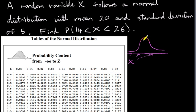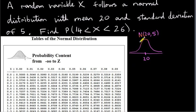This is known as a normal distribution — this particular shape, this particular distribution. This is not just any old symmetric distribution, actually. It has a particular mathematical form, which you don't have to know about.